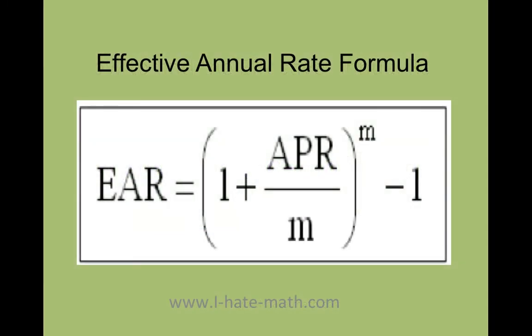So this is the formula to find the effective annual rate. Basically, it's going to be your annual rate or your APR divided by m, all this plus 1 and then elevated to the m, minus 1.